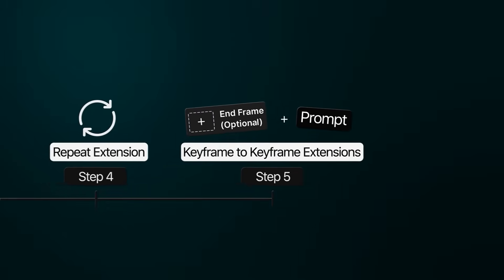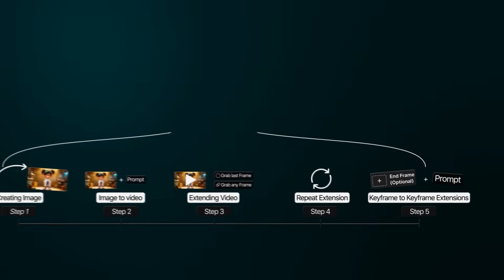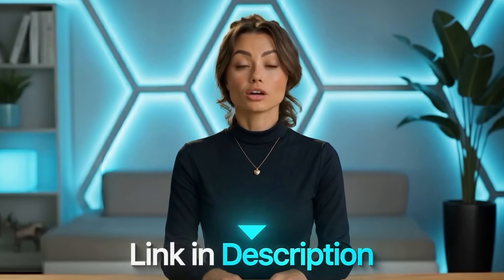Now you can extend the video as long as you want using everything you've learned in this video. It helps that you can do everything within one tool, like OpenArt. So if you want to try it yourself, click the link in the description. Now you know how to create long and seamless animated videos using AI. But here's where it gets crazy — using this technique for animated videos is just the tip of the iceberg. You can apply the exact same concept to any type of video you want.